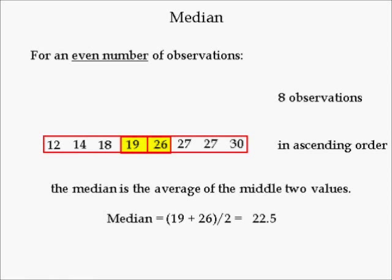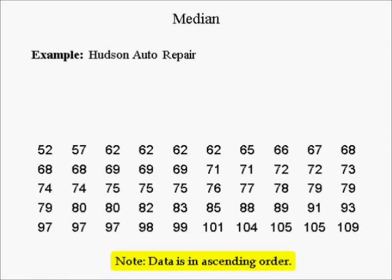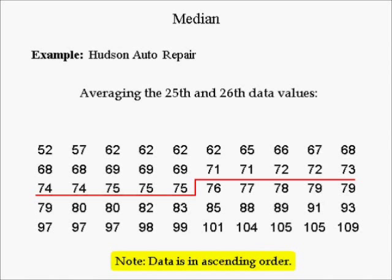To compute the median for the Hudson Auto Repair example, note that the sample size is 50, which is even, and the data is in ascending order. We split the data into two parts: 25 in the lower half and 25 in the upper half. Since there is no middle number, the median is found by averaging the 25th value, which is 75, and the 26th value, which is 76. The median equals 75.50. In this example, the median is below the mean of $78.98, which is typical for distributions skewed right.